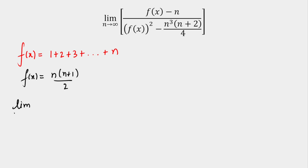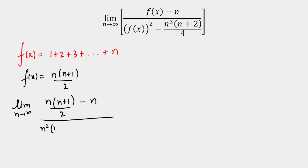Now I am going to plug f of x into the limit. We get the limit as n → ∞ of [n(n+1)/2 − n] divided by [n²(n+1)²/4 − n³(n+2)/4], since f(x)² is written in the denominator.